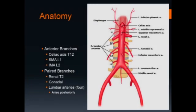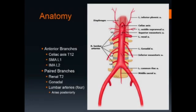I will briefly describe the anatomy of the abdominal aorta. The abdominal aorta runs from the aortic hiatus to the bifurcation. It has three major anterior branches: the celiac axis at T12, the SMA at L1, and the IMA at L2.